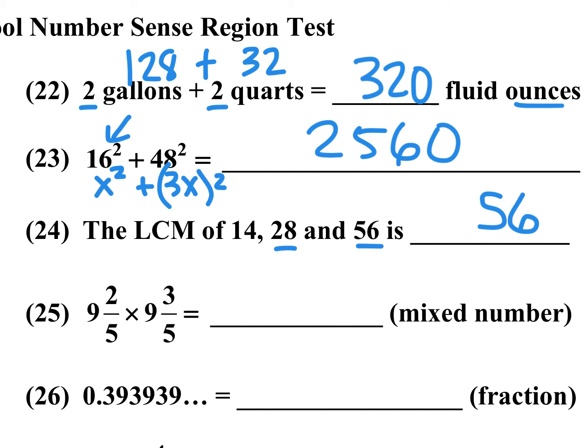Number 25, 9 and 2 fifths times 9 and 3 fifths. On this one, you have your fraction parts add up to 1, and then your numbers, 9 and 9, is the same number. So there's a special shortcut for number 25. What you're going to do is you're going to multiply 2 fifths times 3 fifths. That's 6 over 25. And then you bump one of these by 1, make that a 10. 9 times 10 is 90. So the answer there is 90 and 6 over 25.